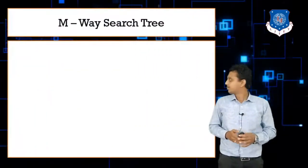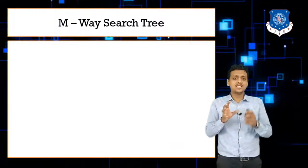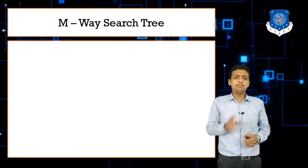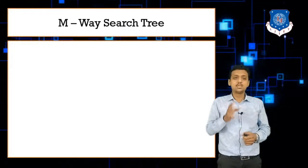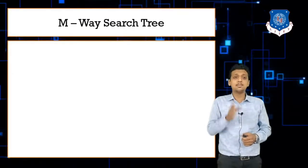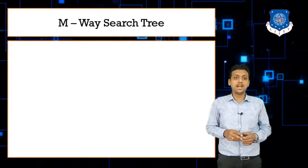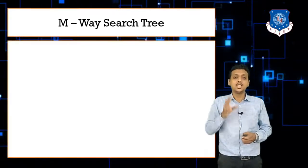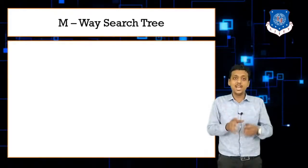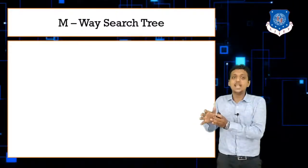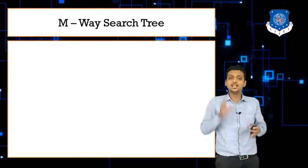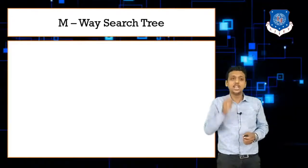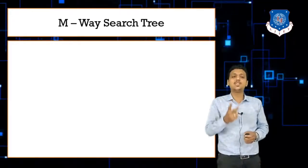M-way stands for multi-way search tree. In a binary search tree, a tree contains a maximum of two children. Data is inserted or deleted in ascending order, where the smallest values are on the left side and greater values are on the right side — that tree is known as a binary search tree.